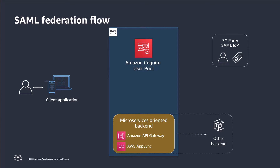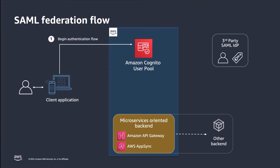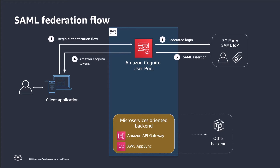Let's quickly walk through a high-level example of what a SAML federated login would look like. An end user interacting with a client, such as a mobile application or a web app using a browser, would begin their authentication flow against a Cognito user pool. In this example, the user's account is managed by a third-party SAML identity provider that has been integrated with a Cognito user pool and therefore the user will be redirected accordingly. After successful authentication with the identity provider, a SAML assertion will be returned to the Cognito user pool's SAML IDP endpoint. Upon validation of the received assertion, the Cognito user pool will issue JSON web tokens to the client. The client on behalf of the user will be able to use these tokens to access resources. For example, the application might display the user's first name, which can be obtained from the ID token, and the access token can be used for coarse-grained authorization against downstream backend services.